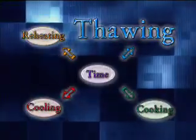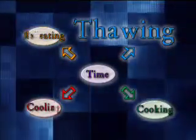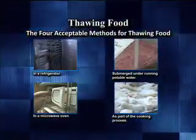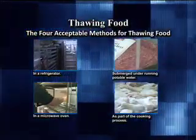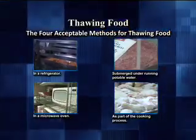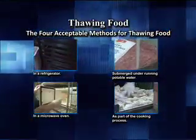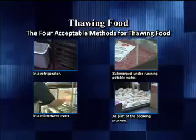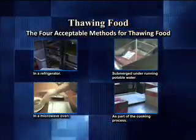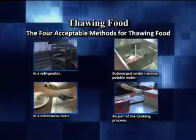Thawing of foods. There are four approved methods of thawing frozen foods which include: under refrigeration until ready for preparation, under cool running water less than 70 degrees, as part of the cooking process by cooking the frozen foods, or in a microwave oven then cooking immediately.